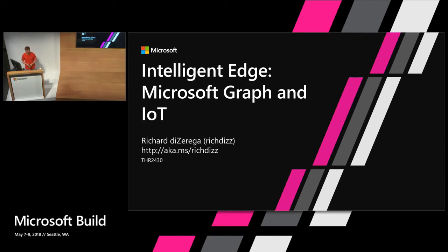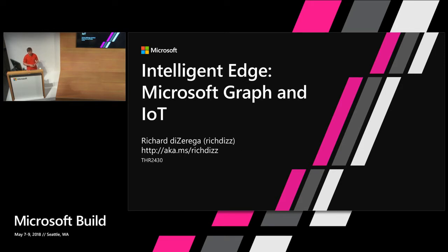My name is Richard. I'm a principal engineer at Microsoft, in a part of Microsoft called Commercial Software Engineering. What we do is we work with partners building commercial grade software that they're selling. We do that across a number of different technologies. My area of focus is Graph. I've worked with partners big and small on all kinds of creative solutions, including IoT solutions that connect to things like the Graph.